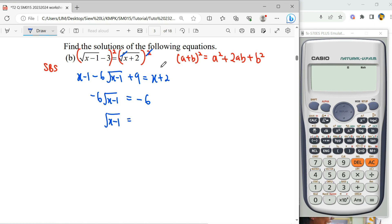This coefficient negative 6, negative 6, we can divide by negative 6, we get 1. To remove the square root, we square both sides again.